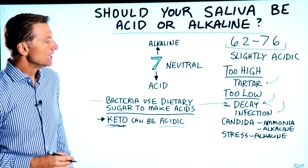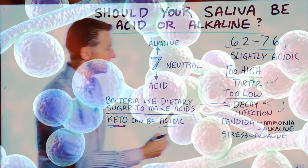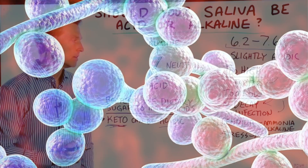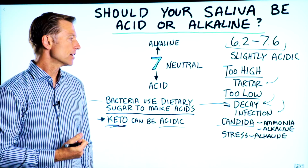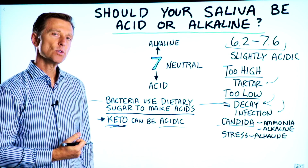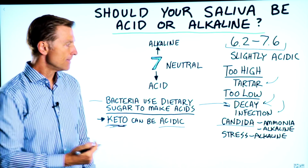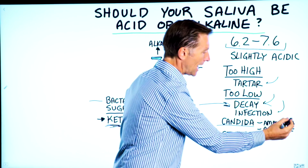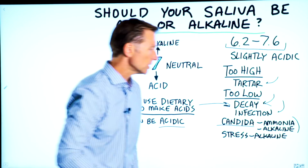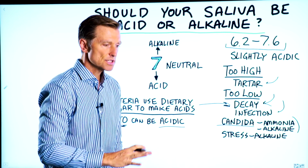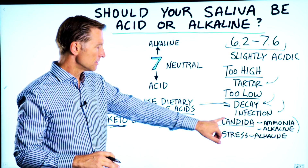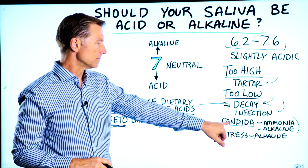If someone has candida in the mouth, they're going to develop excessive amounts of ammonia. Ammonia is very alkaline, so that can really throw off your entire pH from that infection.